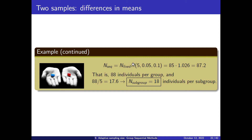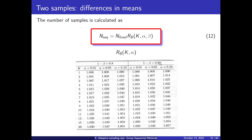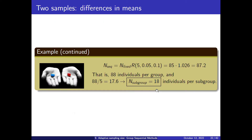In our case, we have five stages with a confidence level of 95% and a statistical power of 90%. Looking up five stages and alpha of 0.05, we will need a few more samples: 87, increased to 88. Because it has to be a multiple of five, we round up to 90 in total. This is per group — so for both drugs — meaning at each stage we will analyze 18 people in each one of the groups.